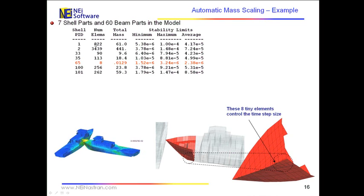And here we find that there are seven different parts of the mesh, shell and beam parts. The shells are the only ones that are really important here, so we'll look at the shells. And what we see is that the minimum stable time step is found in this part of the mesh that I've shown here in red, part ID 65, and it has a stable time step of approximately one and a half microseconds.